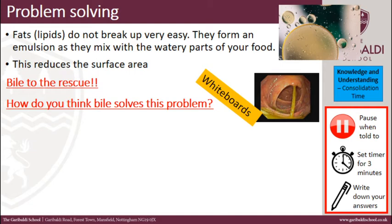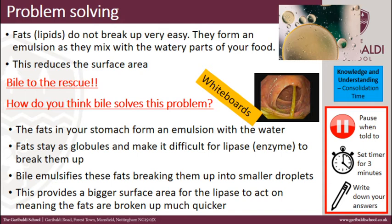How do you think bile solves this problem? On your whiteboards, write down how bile would solve this problem in the digestive system. Set your timer for three minutes and then write down your answer. Fats in your stomach form an emulsion with the water — correct. Fats stay as globules and make it difficult for the lipase enzyme to break them up. Remember to name the specific enzyme: lipase. So bile emulsifies these fats, breaking them up into smaller droplets. This provides a bigger surface area for the lipase to act on, meaning the fats are broken up much quicker.